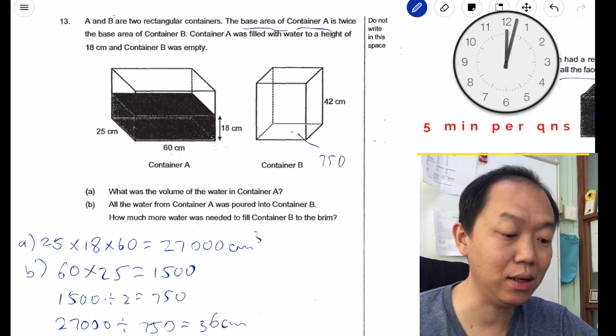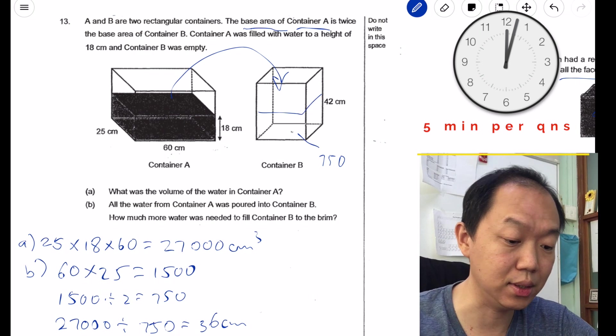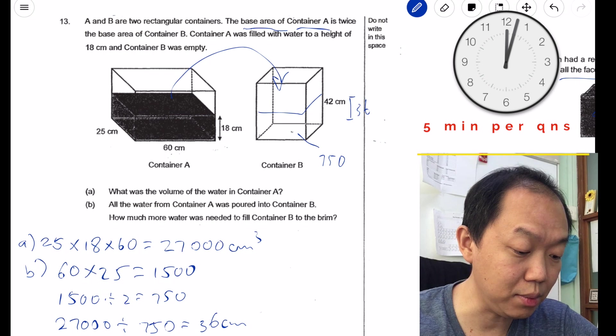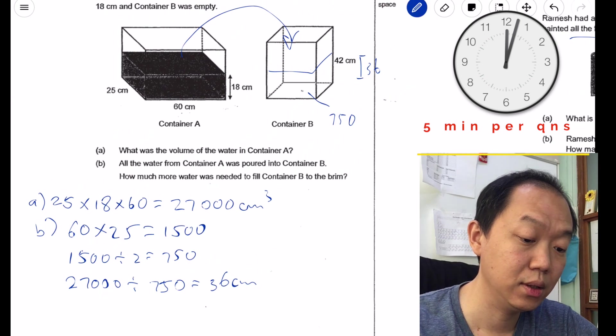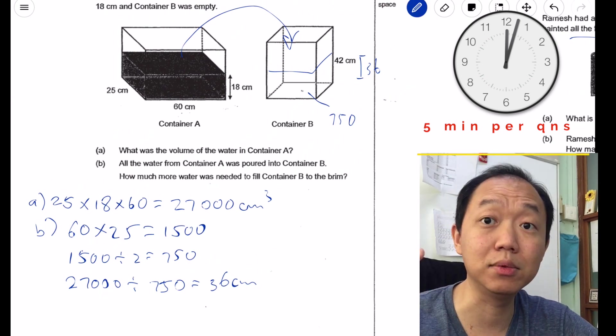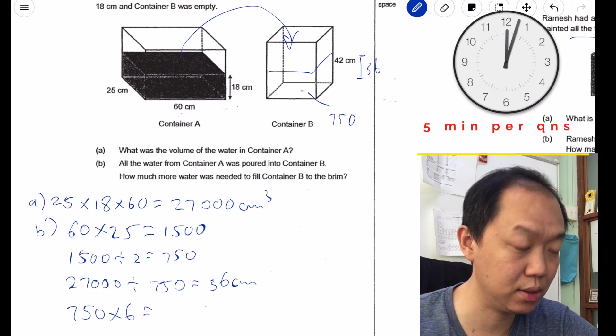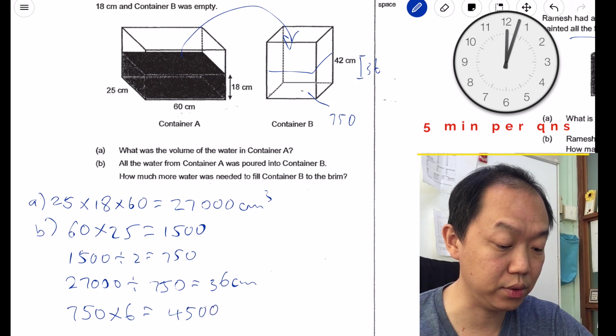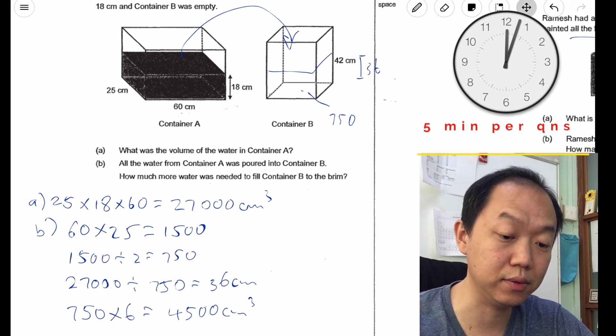Now water is being poured inside, that's 27,000 cm cubed, so I want to find the height. To find the height, you take the volume divided by base area. So volume 27,000 divided by base area of 750, I get 36. So right now water is being poured inside here and it goes up to 36 cm. How much more water was needed to fill container B to the brim? Since I have up to 36 cm, I have 6 cm more to go. I just take 750, which is the base area, multiply with 6. 750 times 6 is 4500 cm cubed. That is the answer.